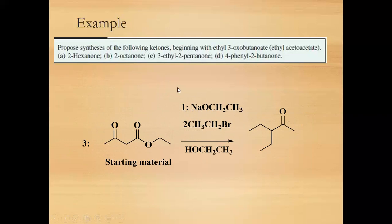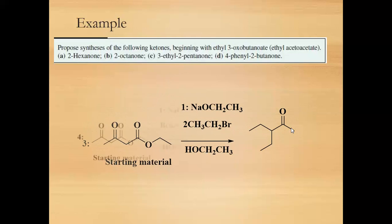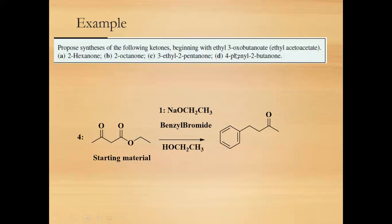To synthesize 3-ethyl-2-pentanone: bond breaking occurs at the same position. Sodium ethoxide forms the carbanion, which is alkylated to add an ethyl group. The ester is alkylated again to give a disubstituted product. This is then hydrolyzed and followed by decarboxylation to give 3-ethyl-2-pentanone.